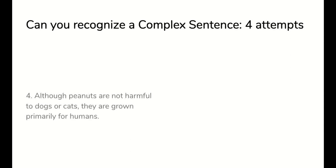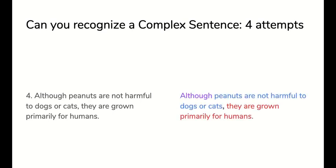Number four. Although peanuts are not harmful to dogs or cats, they are grown primarily for humans. That is a complex sentence. It has all the parts, dependent, independent, comma, and a subordinate conjunction in the front.